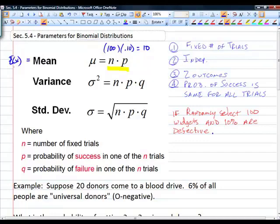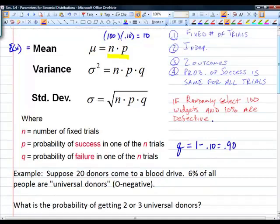The mean is your expected value. The formula is n times p, where n is the fixed number of trials, p is the probability of success in one of the n trials, and q is the probability of failure. We can figure out what q is because there's only two outcomes, either success or failure. The probability of success plus the probability of failure has to equal 1. So if there's a 10% chance of success, what would the probability of failure be? 90%.